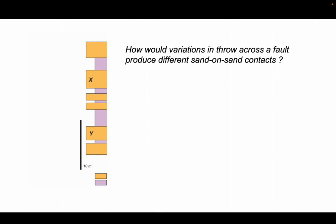Here's a stratigraphic section of beige sandstones and mauve shales. We want to ask ourselves how would variations in throw across a fault that cuts this succession produce different sand-on-sand contacts, and whether these contacts are able to provide communication of fluids across the fault. We'll predict the fault sealing behavior using the parameter shale-gauge ratio.